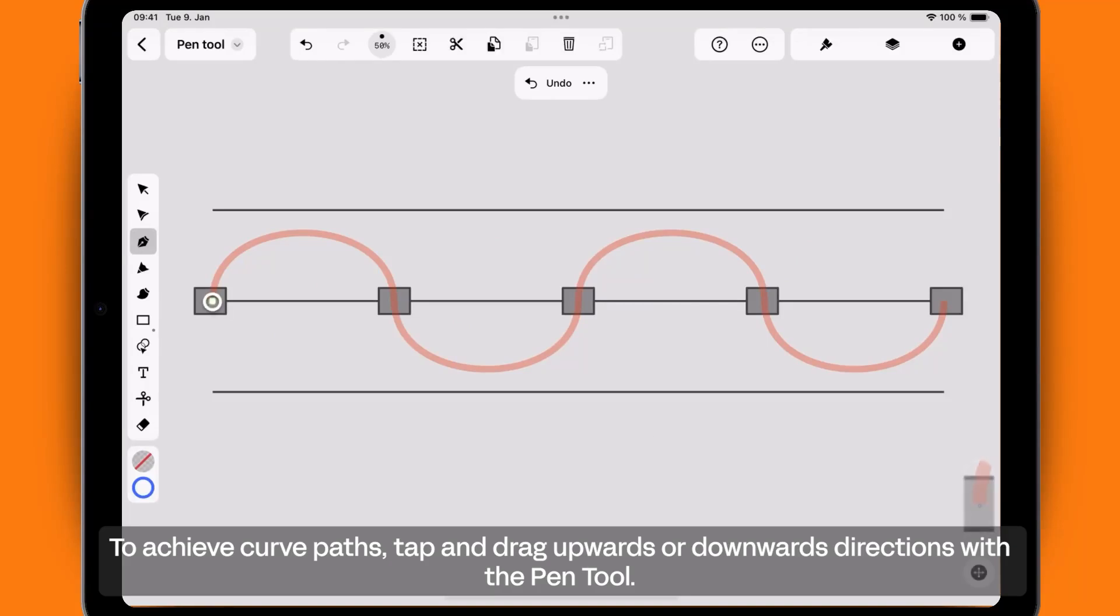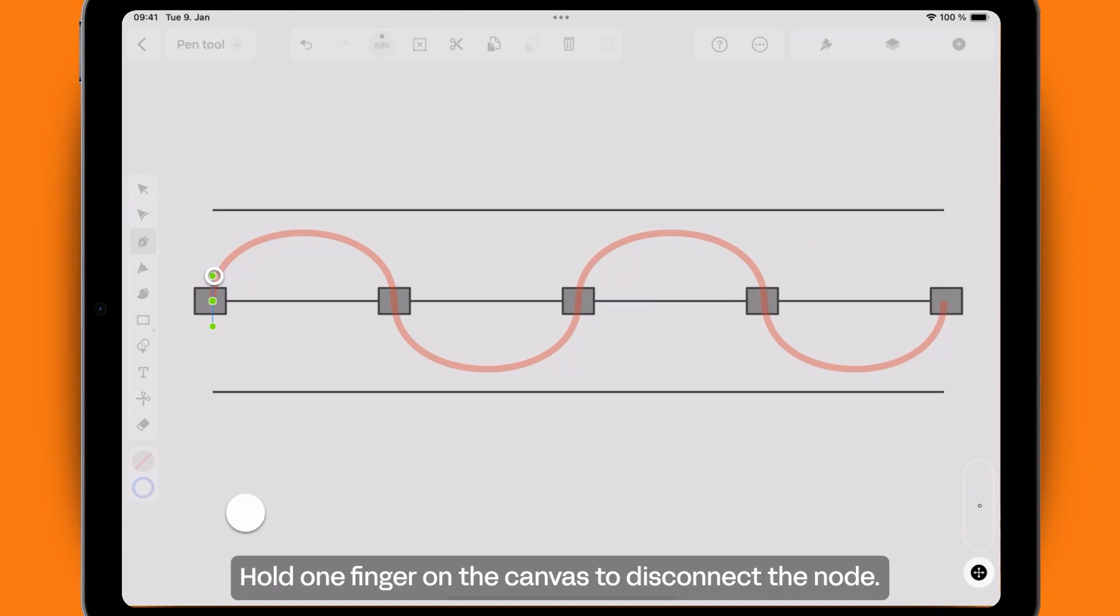To achieve curve paths, tap and drag upwards or downwards directions with the pen tool. Hold one finger on the canvas to disconnect the node. Hold two fingers to snap the handles to 45 degree angles.